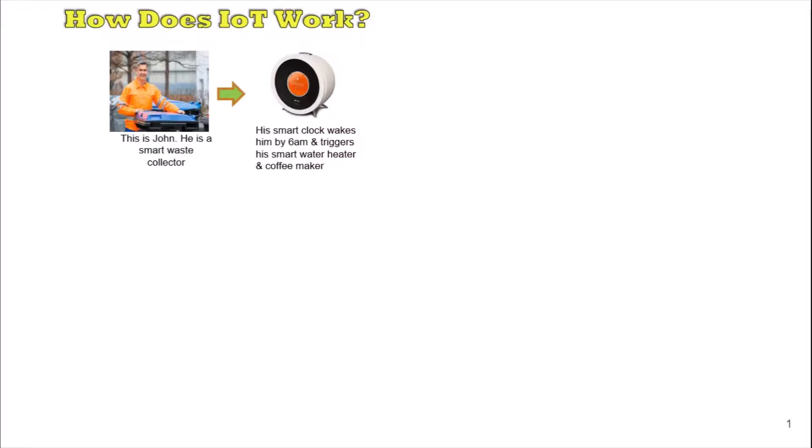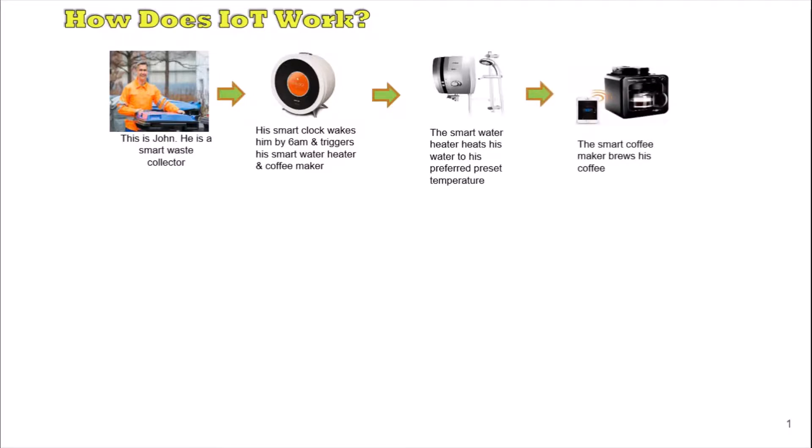This triggers his smart heater and coffee maker. The smart water heater heats his water to his preferred preset temperature. Then the smart coffee maker brews his coffee. After having a warm shower and a great coffee, he drives to his office.